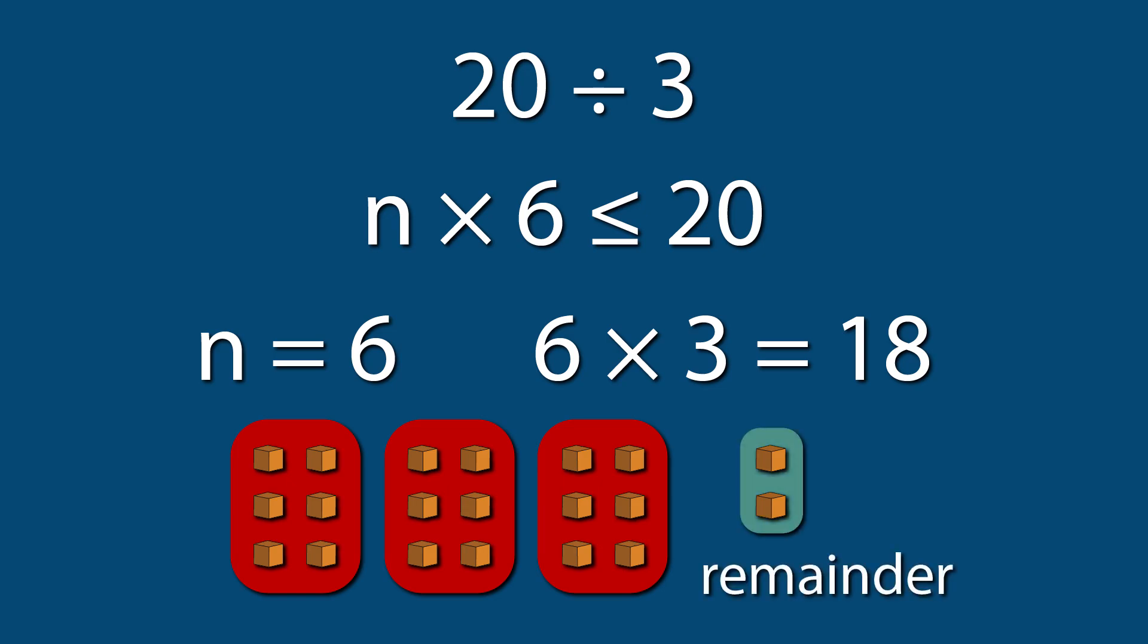But, since we're dividing 20, we have 2 left over that cannot be divided equally. These 2 are called the remainder because they are left over. So, we could say 20 divided by 3 equals 6 remainder 2.